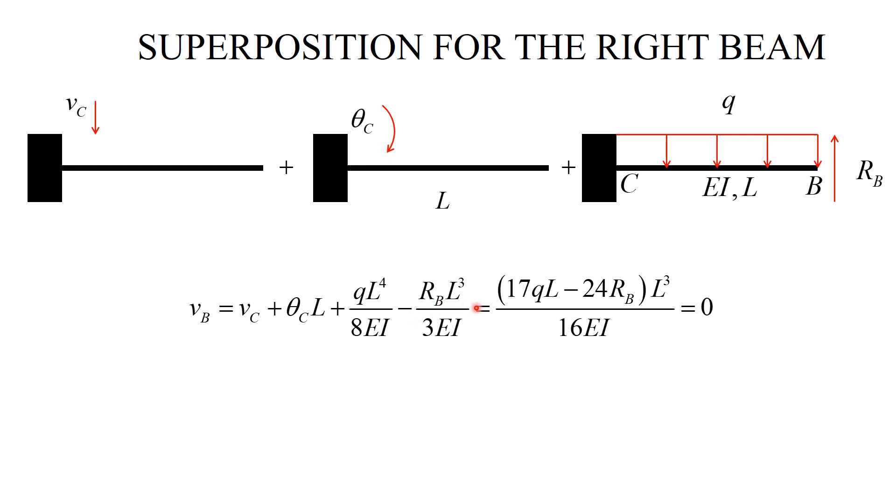We can do the algebra, and we obtain this expression for V sub B. We now set V sub B equal to zero because in the original beam that's what it is. This gives us the equation for calculating R sub B, and that's what it is. This is part of my answer, one of the reactions.